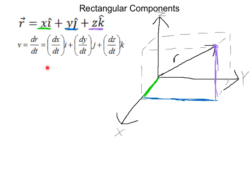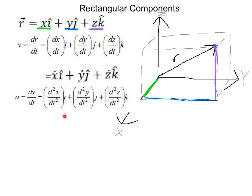To get velocity in each direction, you take the derivative of each component instantaneously with respect to time — you split it up into components. And then you do the same thing for acceleration: you take the acceleration of each component, which gives you the acceleration vector broken into components.